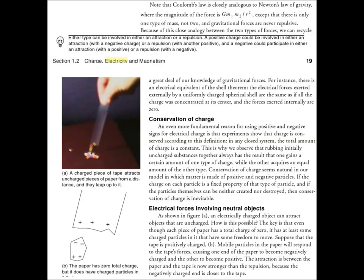An even more fundamental reason for using positive and negative signs for electrical charge is that experiments show that charge is conserved according to this definition. In any closed system, the total amount of charge is a constant. This is why we observe that rubbing initially uncharged substances together always has the result that one gains a certain amount of one type of charge while the other acquires an equal amount of the other type.